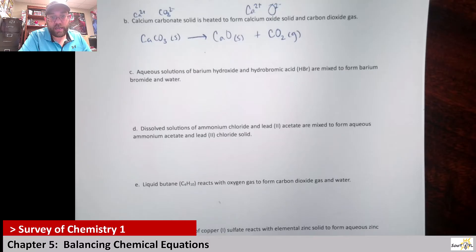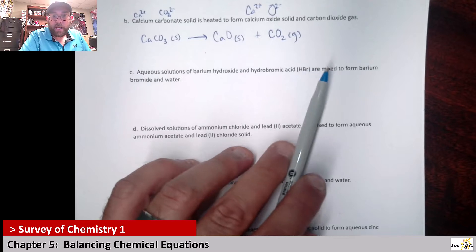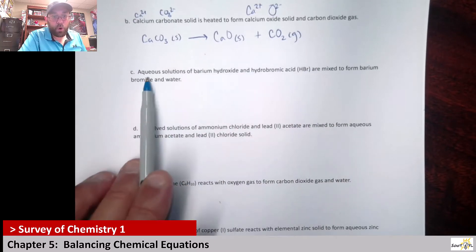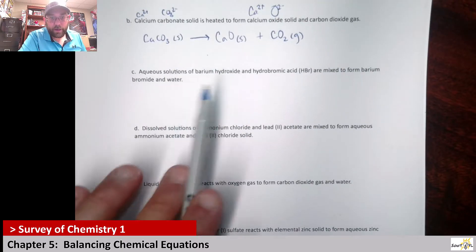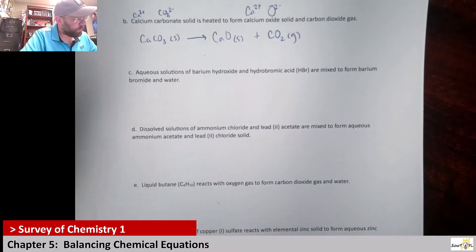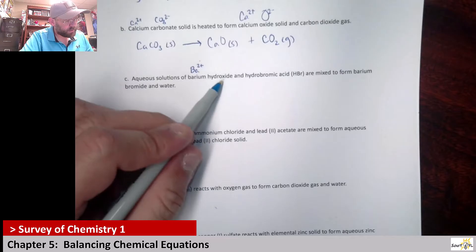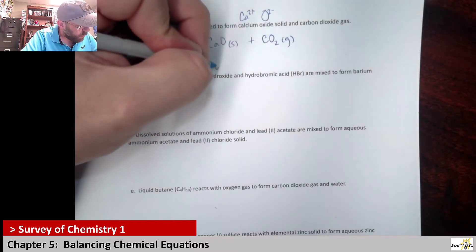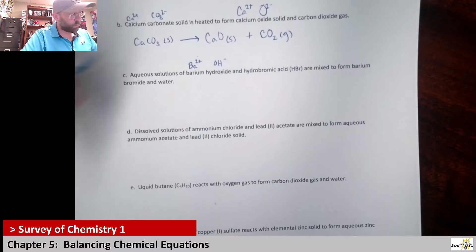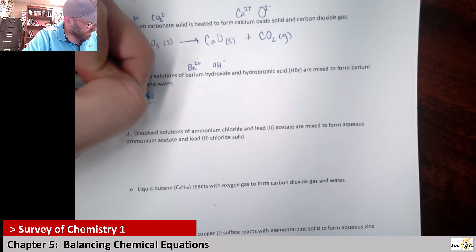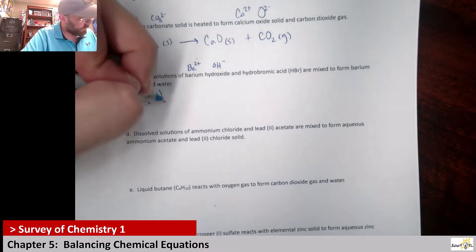Problem C: aqueous solutions of barium hydroxide and hydrobromic acid mixed to form barium bromide and water. Barium is Ba with a 2+ charge; hydroxide is OH⁻. Two plus minus one means one barium paired with two hydroxide ions: Ba(OH)₂, aqueous.